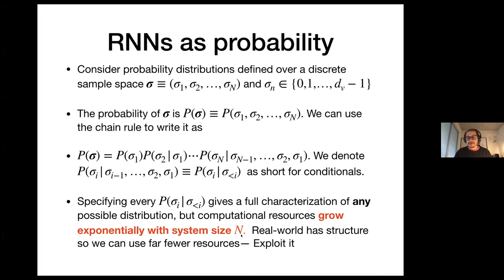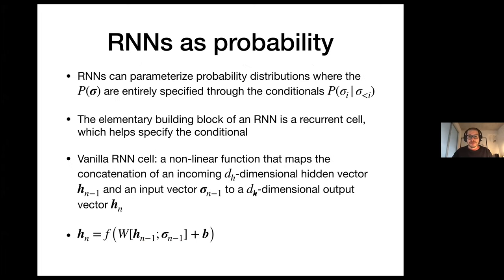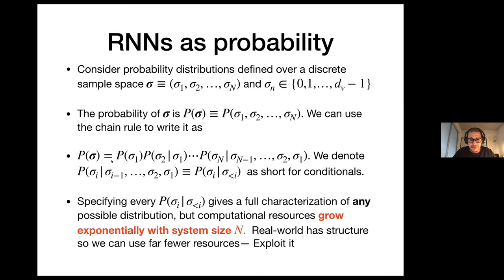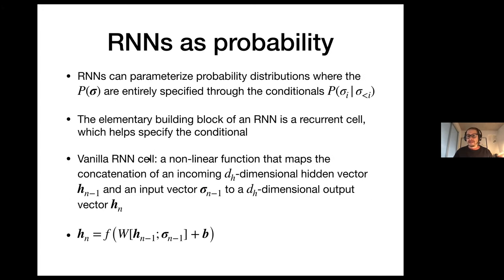Nature is benevolent and real-world problems have enough structure that we can use far fewer resources. RNNs do exactly that — they parametrize probability distributions P(sigma) entirely through the conditionals. Basically, what we do is parametrize each of the conditionals in the chain rule. That's what the RNN does in this formulation.